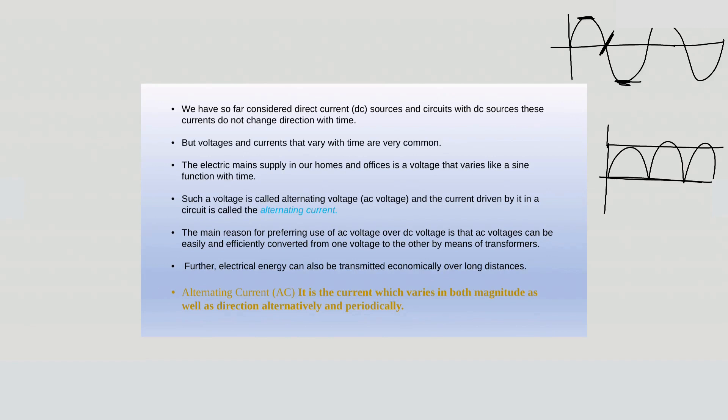Why do we prefer to use AC voltage over DC voltage, which can be easily and efficiently converted? The thing is, AC can be transferred long distance without loss of energy. Moreover, DC voltage is dangerous as compared to AC voltage. Electrical energy when transferred over long distances is more economical using AC.